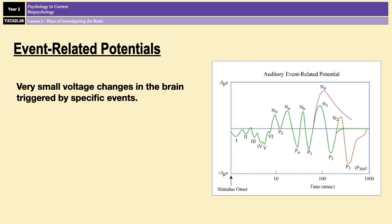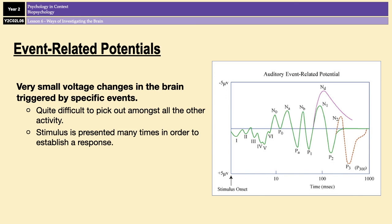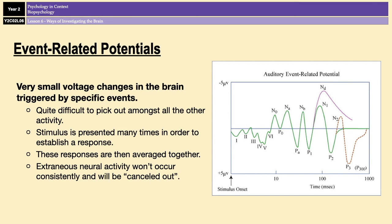The issue with ERPs is that it's quite difficult to pick out the voltage change related to a specific event amongst all the other electrical activity in the brain. To establish a specific response to a specific stimulus, the stimulus has to be presented many, many times and all of the responses are averaged together. In doing that, it's possible to filter out all neural activity not related to that stimulus, because it won't occur consistently. Neural activity related to that stimulus will occur consistently, allowing us to get rid of background noise and make the relevant activity stand out and be easily identifiable.